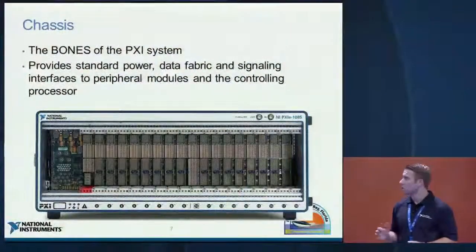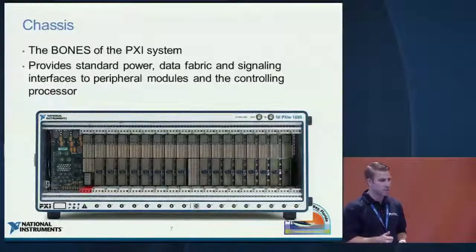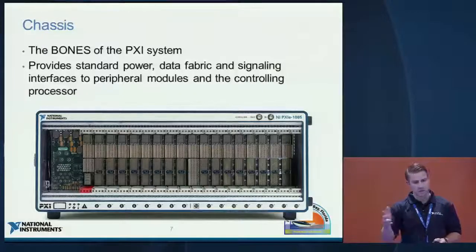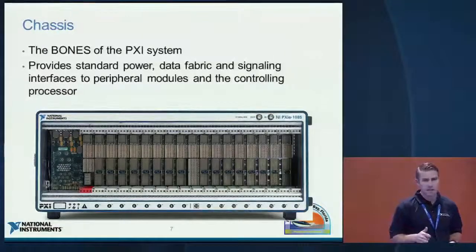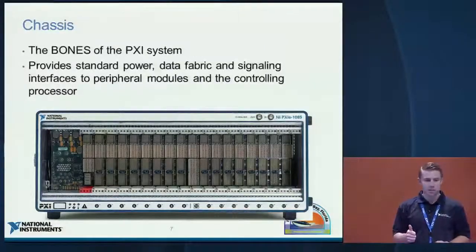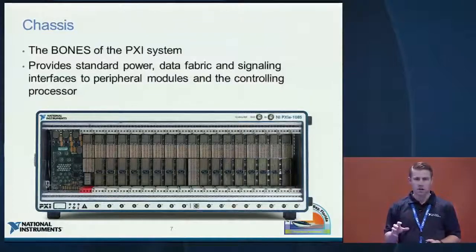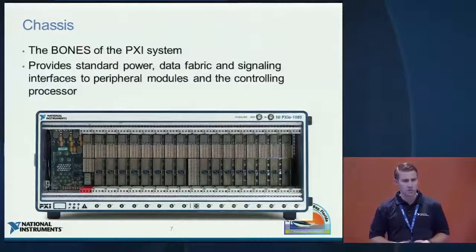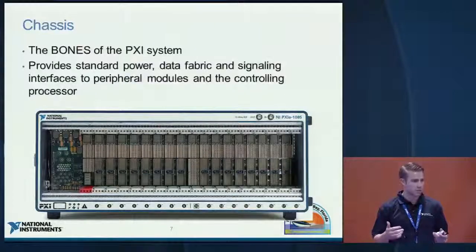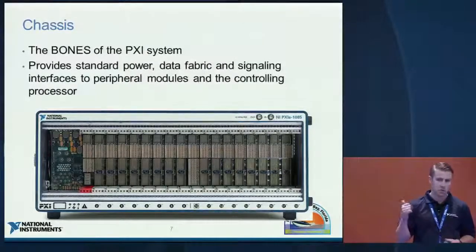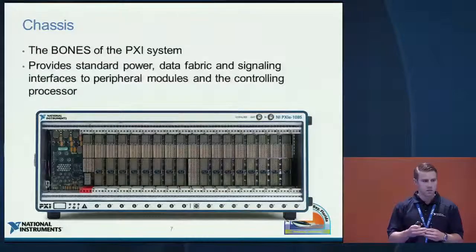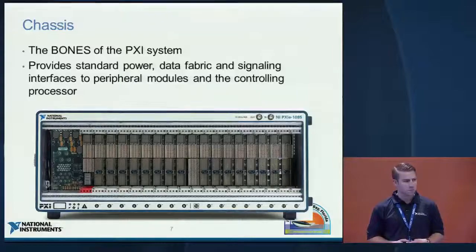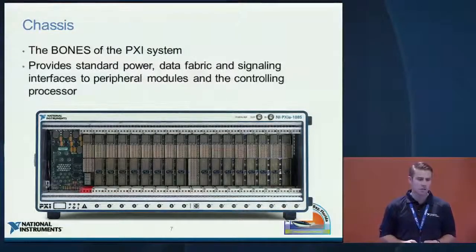The chassis is really the bones of your PXI system. It provides all your standard connections, power, the data fabric embedded in the backplane, and signaling interfaces, as well as power and cooling. The original PXI standard required 25 watts of cooling capacity per slot. With PXI Express, that was bumped to 30 watts. Some chassis exceed the specification — National Instruments chassis go up to about 38.25 watts — which benefits modules that run a little warmer.